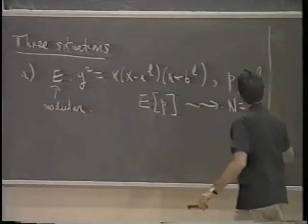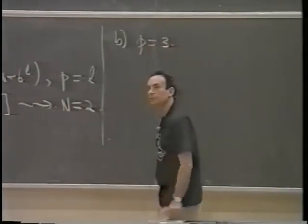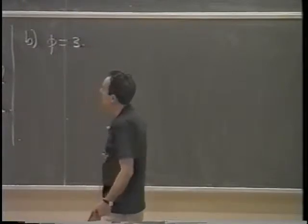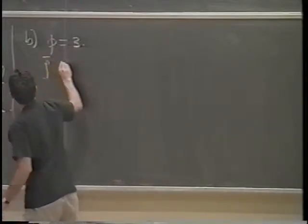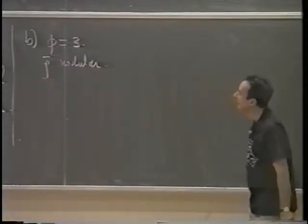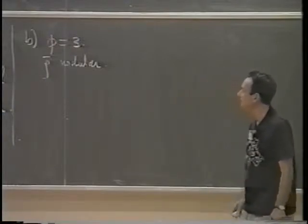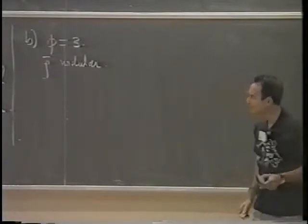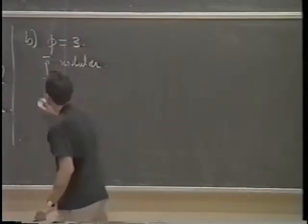The second situation is where you take E to be any semi-stable elliptic curve over Q — you don't yet know it's modular — and you take p equals 3. You make the hypothesis that ρ̄ is irreducible. You find that ρ̄ is modular because of the theorems of Langlands and Tunnell. Once you have modularity of ρ̄, you want to get a precise level for ρ̄. When you do that, you have achieved your goal.